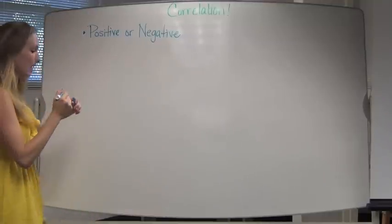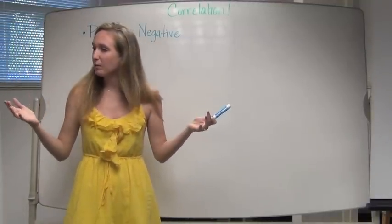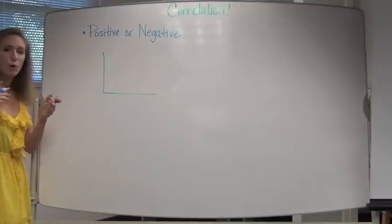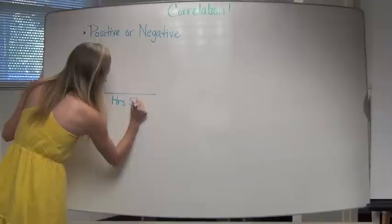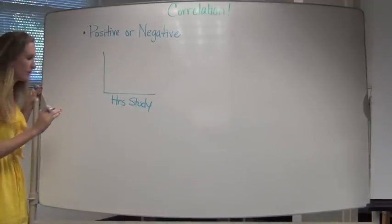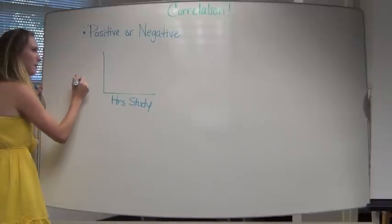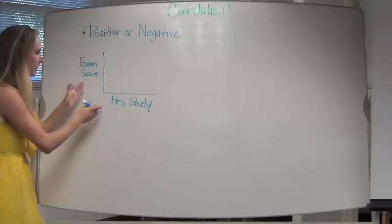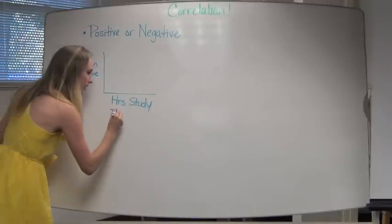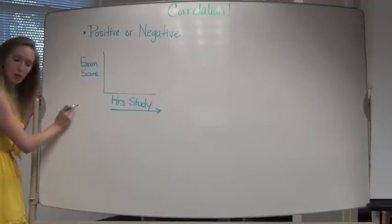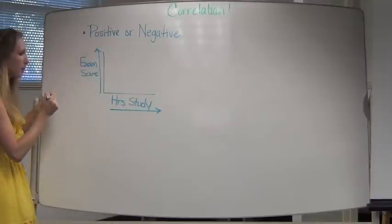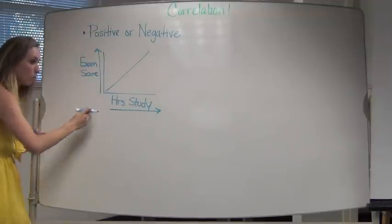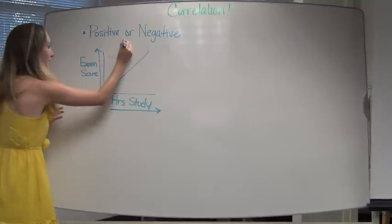Let's start with an example we can even put together in survey data. If I asked the STAT 100 class for the number of hours they spent studying before an exam and also asked them for their exam score, what do you think is the correlation between them? Do you think the more we study, the better or worse we do on the exam? Better — I agree. The more we study, the better we do. This is a classic example of a positive correlation: the two variables increase together. As one increases, the other tends to increase.